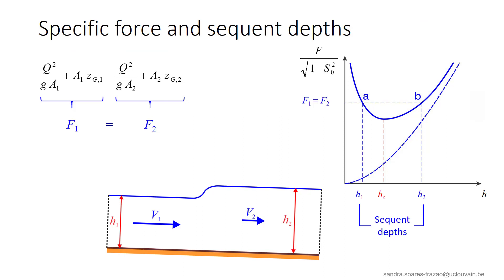We have shown in a previous lesson that a specific force is conserved across a hydraulic jump. The two water depths, h1 and h2 in the equation here, are the sequent depths.